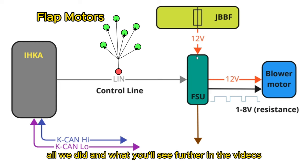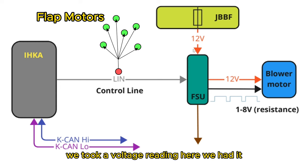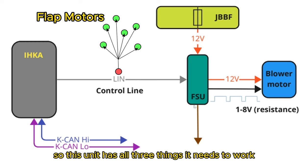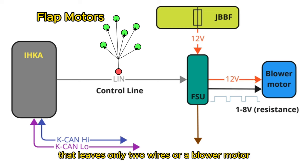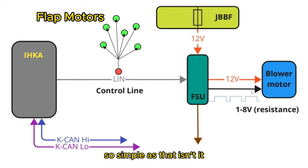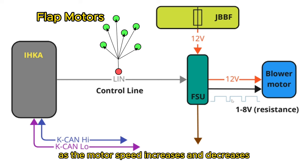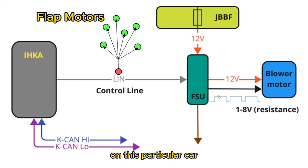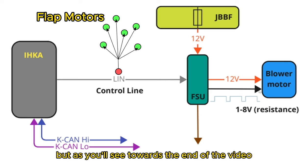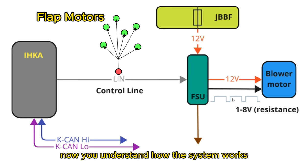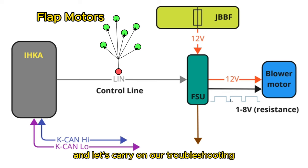All we did was take a voltage reading — we had voltage, we had a ground, and we measured a good LIN signal. So this unit has all three things it needs to work. That leaves only two wires at the blower motor: 12 volts and a varying-resistance ground as motor speed increases and decreases. On this particular car it was switched off for safety, but as you'll see towards the end of the video with the new motor installed, we'll see it in operation. Now you understand how the system works, let's carry on troubleshooting.